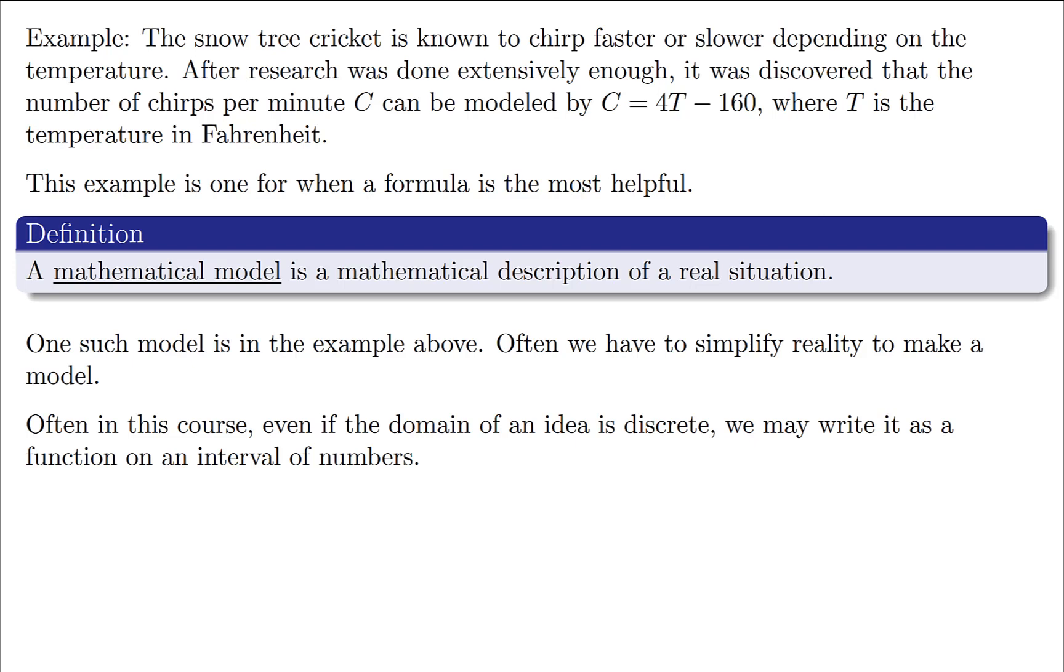Now the problem with models is a lot of times we have to simplify reality to make this model work. This one's probably pretty accurate, but there are many things that are very difficult for us to describe carefully. One such example is the gravity equation. There's a function that will describe how far something has traveled after falling for so long, but it has to ignore air resistance, and when you fall far enough air resistance is a big deal. Another thing is oftentimes the domain of an idea could be discrete, but to actually make it a function we might have to use this idea of continuous and make an interval of numbers to define it.